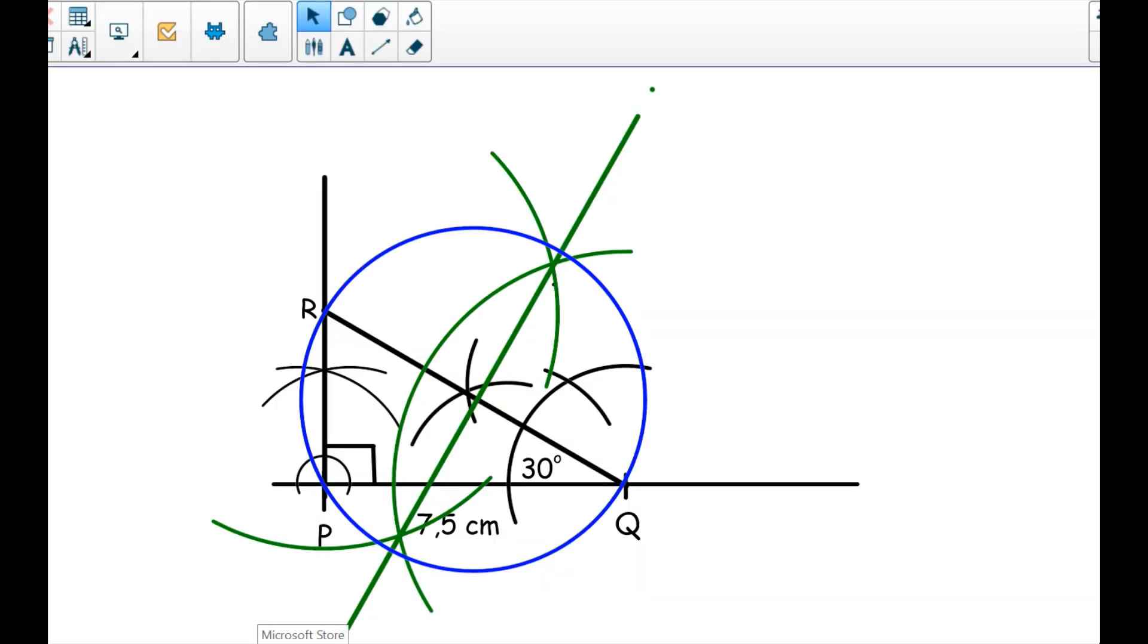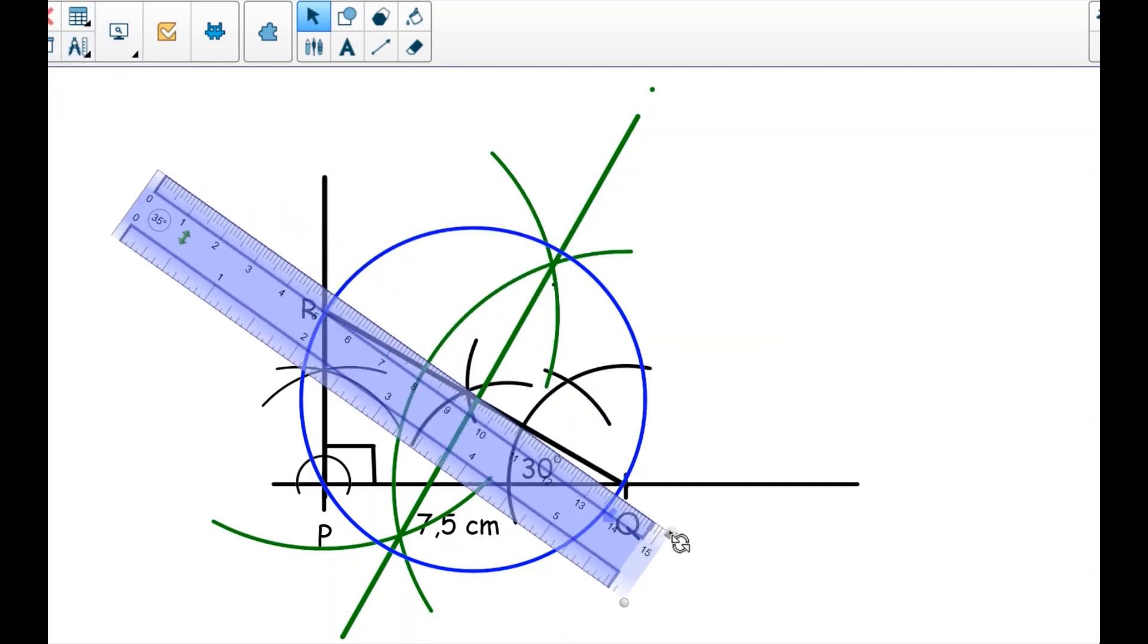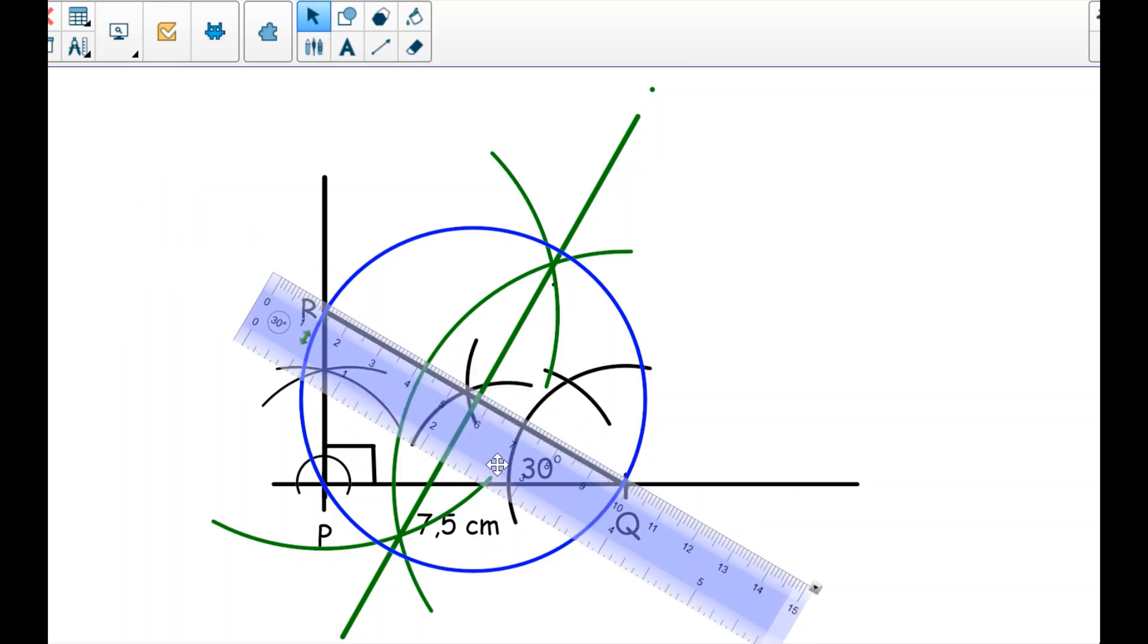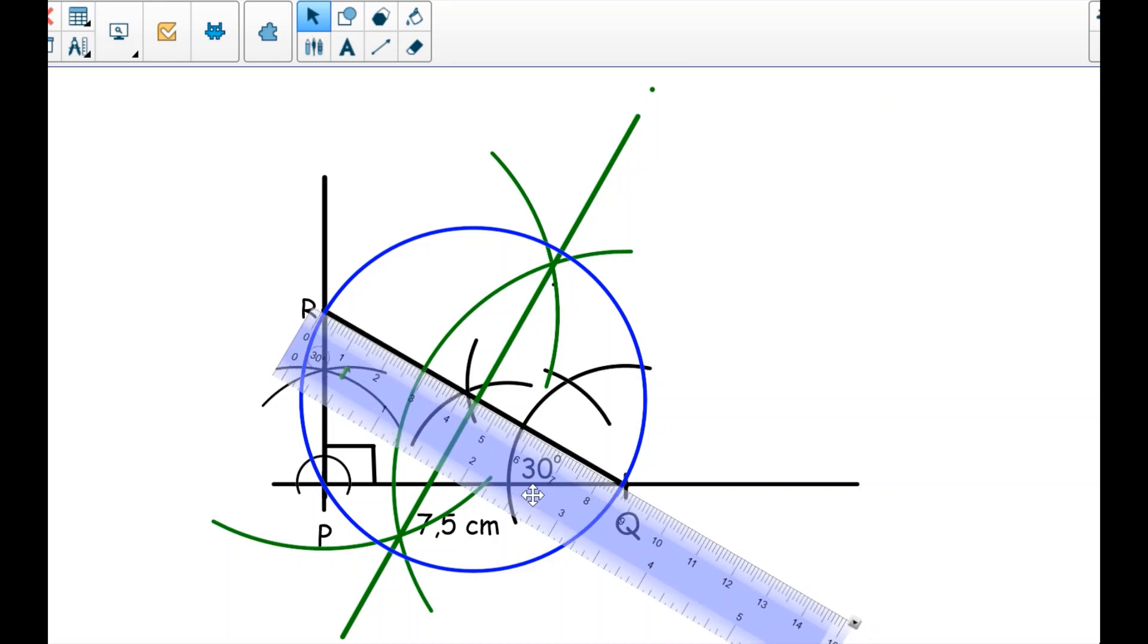So I am just going to take my ruler and measure and write the distance. I take my ruler, then measure from any point, even from Q or from R to the center.